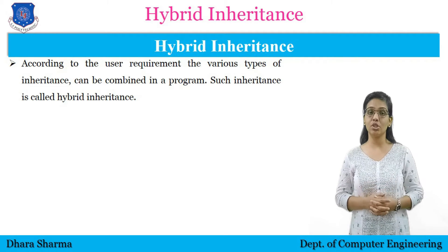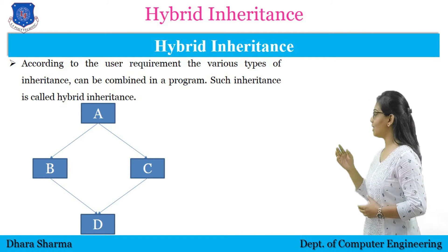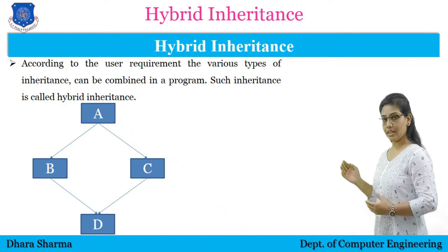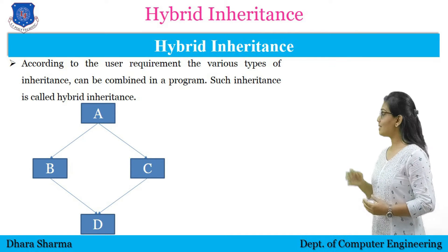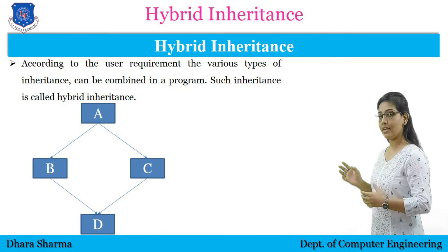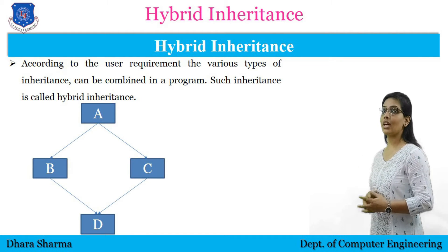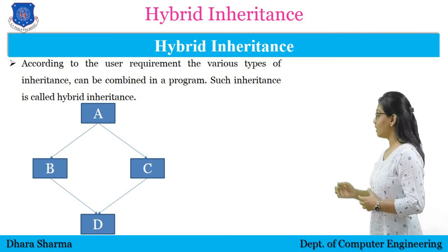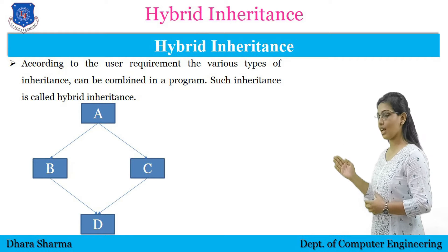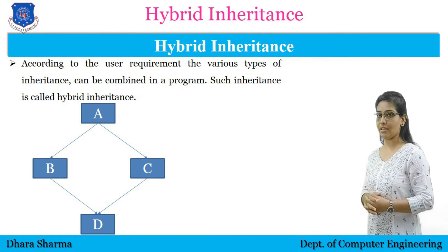Here we have merged hierarchical inheritance with multiple inheritance. If you see in the diagram, there are four classes: class A, B, C, and D. Class A is a base class from which the properties are getting inherited into class B and C. So this is the structure of hierarchical inheritance. Then the properties from class B and C are getting inherited into class D, which is the structure of multiple inheritance.